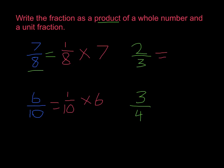For 2 thirds, we take our unit fraction 1 third and multiply it by 2. And for 3 fourths, we take our unit fraction 1 fourth and multiply it by 3. That is how we write a fraction as the product of a whole number and a unit fraction.